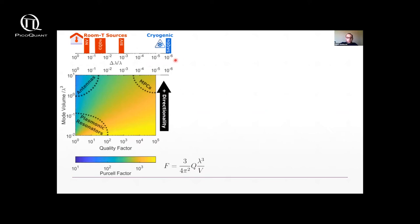On top I also show the linewidths of some emitters. You have NV centers, colloidal quantum dots, silicon vacancies, and for cryogenic sources I chose self-assembled quantum dots which are very famous.